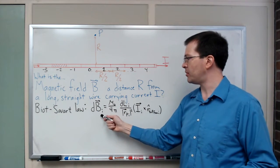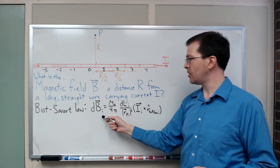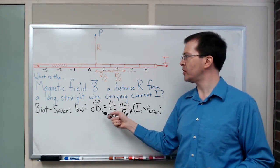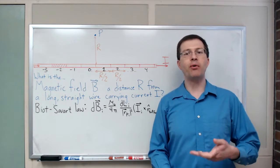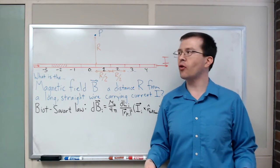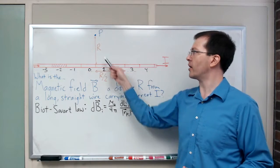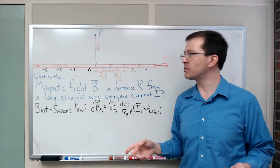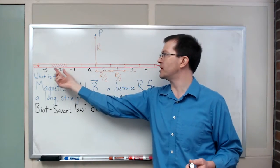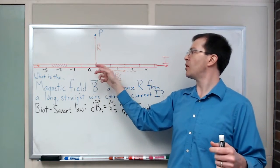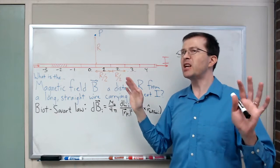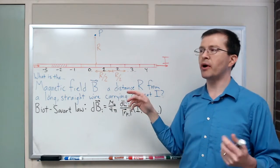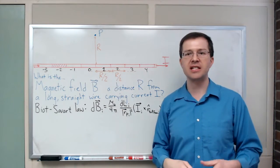Then if I add up all the little DBis, all the little contributions to the field due to each one of these segments, that should be a decent approximation to the overall effect of the total wire at point P. It's not perfect, because to be perfect we want to break it up into a million little segments of R over a million or R over a trillion. But keep it simple, we're going to break it up into these R over 2 sized chunks and see what happens.